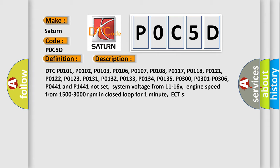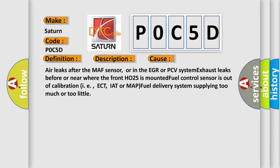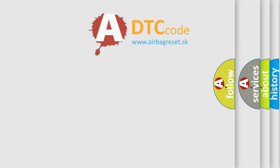This diagnostic error occurs most often in these cases: air leaks after the MAF sensor, or in the EGR or PCV system; exhaust leaks before or near where the front HO2S is mounted; fuel control sensor out of calibration such as ECT, IAT, or MAP; or fuel delivery system supplying too much or too little. The airbagreset website aims to provide information in 52 languages.